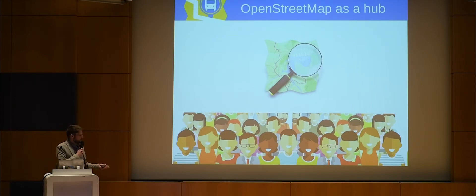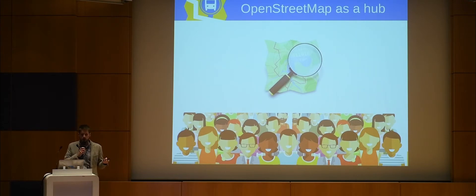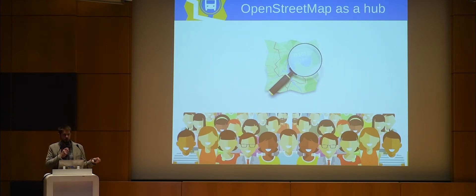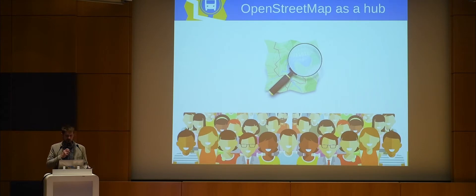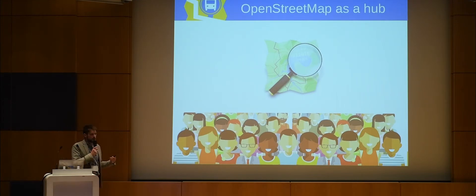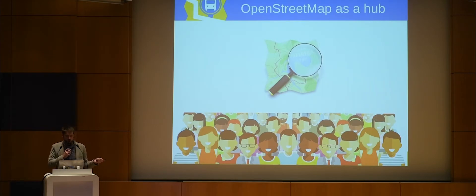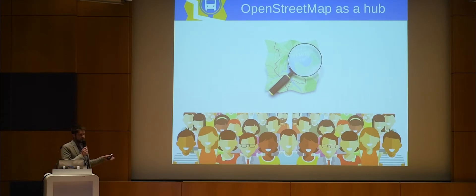Let's use OpenStreetMap as a hub for transport data. Why do we think it's a good idea? First, there is a worldwide standard on how to describe the data, based on collaboration and community discussion. It's community-based — there is already a community in your country and city creating this map. There is a mature ecosystem, and we created specific tools for transport. It's open source and reality-driven: if your idea works, the community will embrace it; if not, they won't use it.